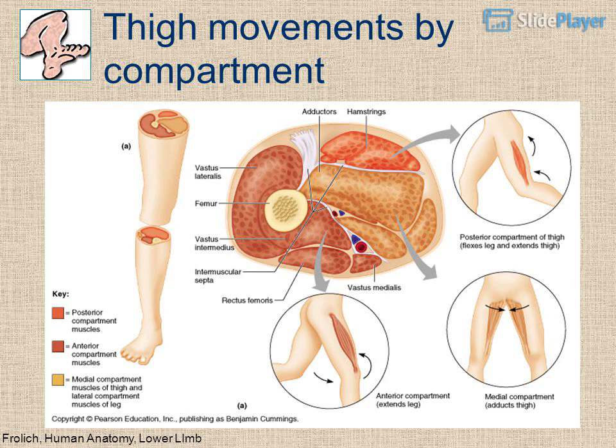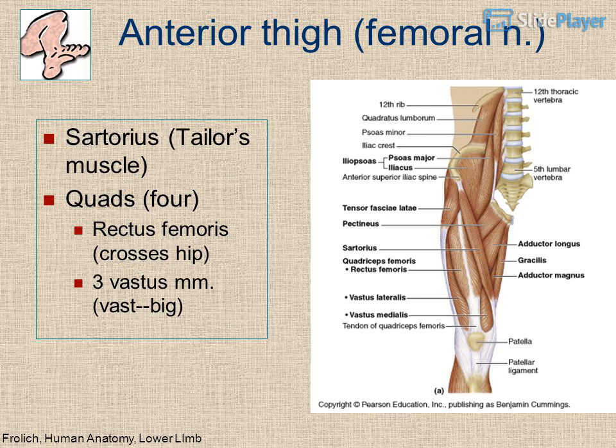Anterior thigh: innervated by the femoral nerve. Muscles include sartorius (the tailor's muscle) and the quadriceps — four muscles: rectus femoris (which crosses the hip), and the three vasti: vastus lateralis, medialis, and intermedius.